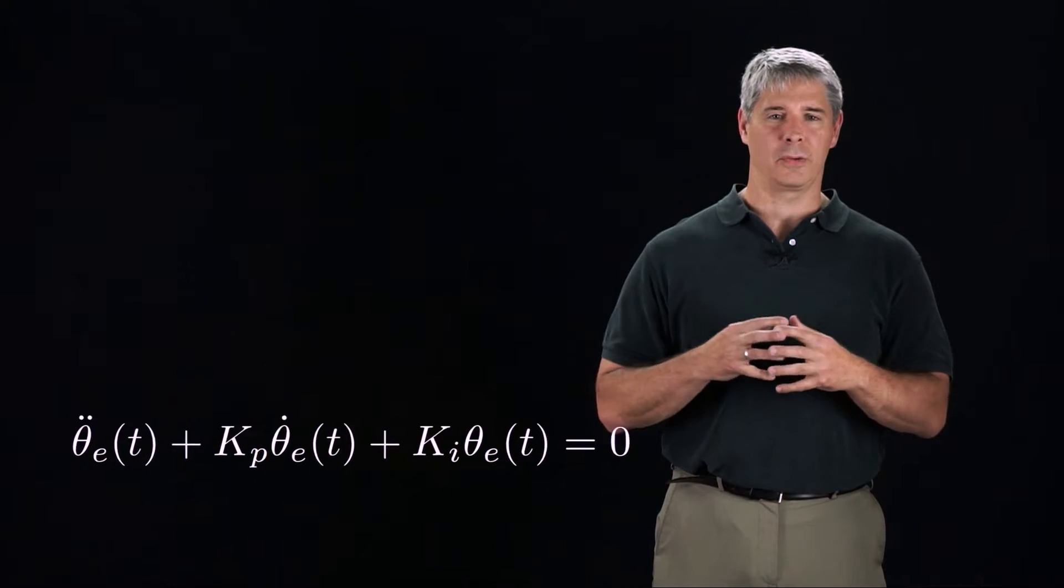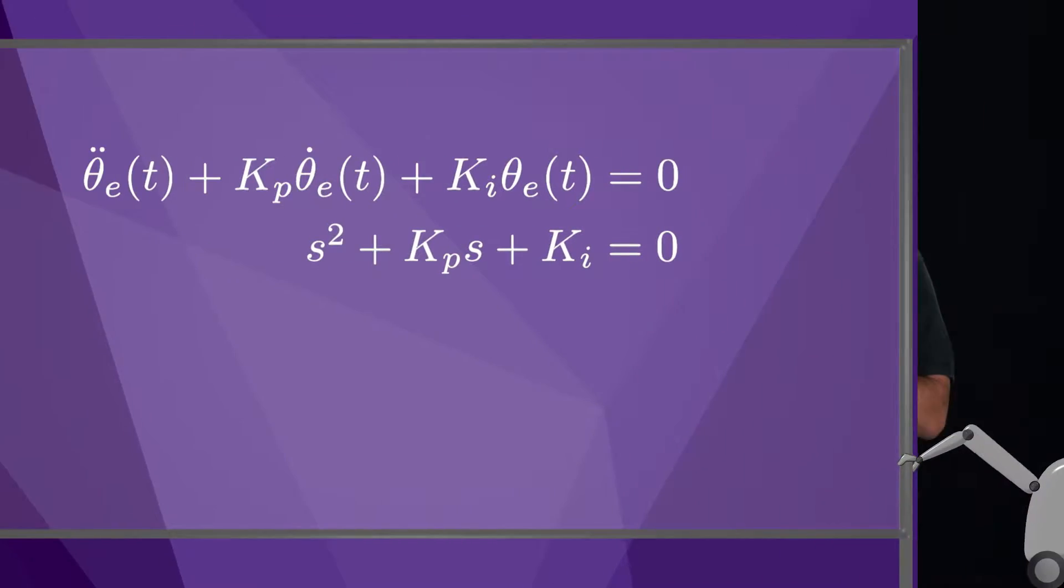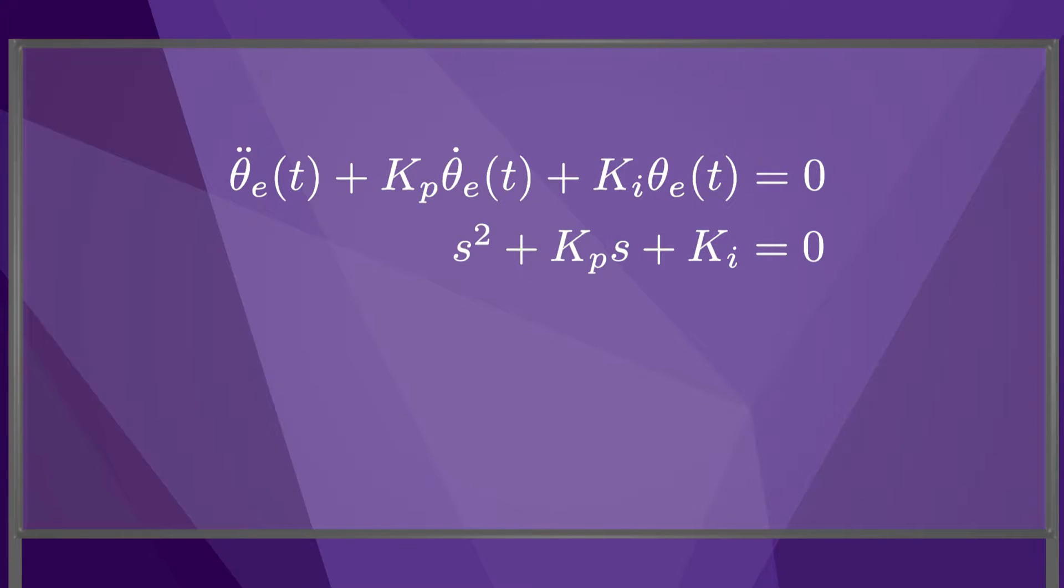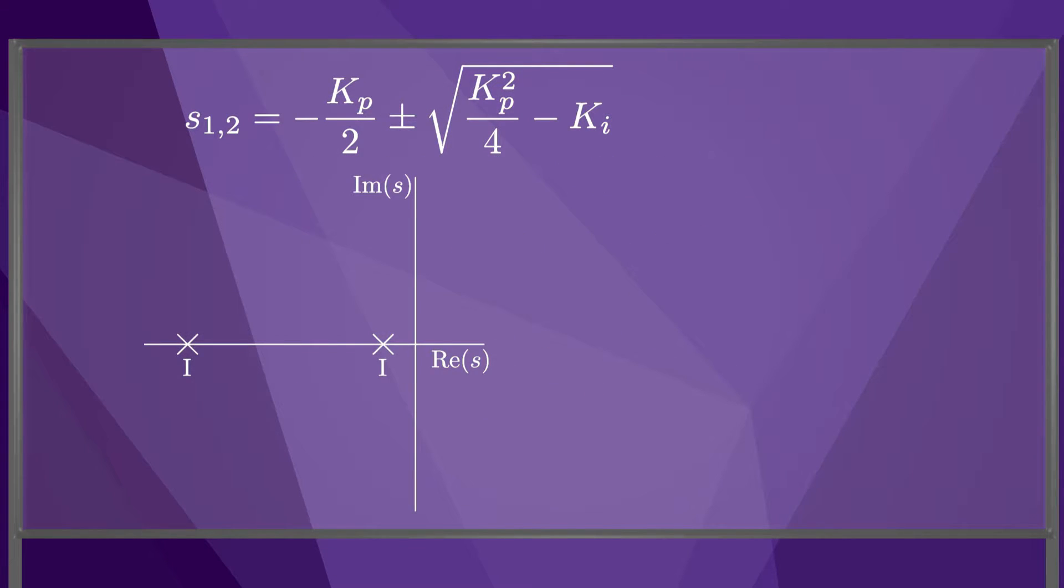The characteristic equation of the error dynamics is s-squared plus Kp·s plus Ki equals zero, which means the roots are given by this equation. We can plot these roots in the complex plane.